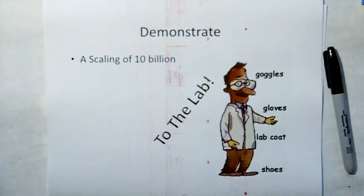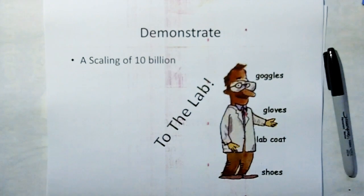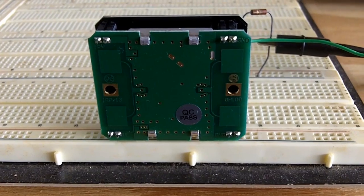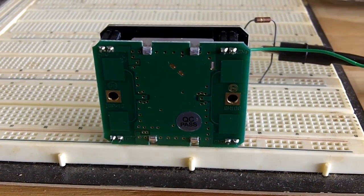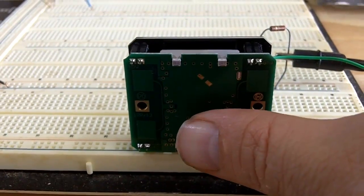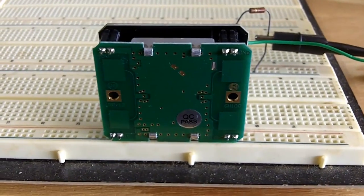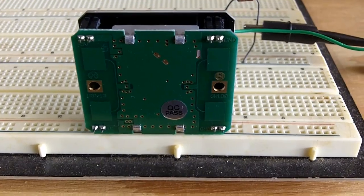So, let me demonstrate now a way we can scale by a factor of 10 billion. Let's go to the lab. What we have here is a tiny Doppler radar. I mean, to give you a case of scale, twice the size of my thumb. This uses 10 gigahertz.